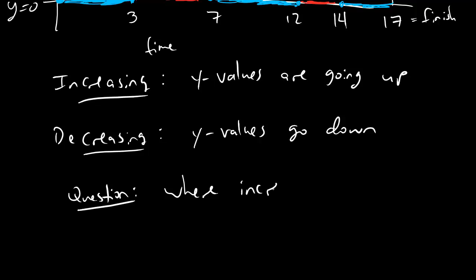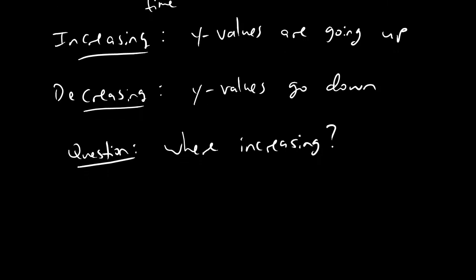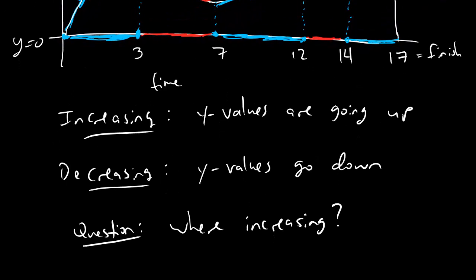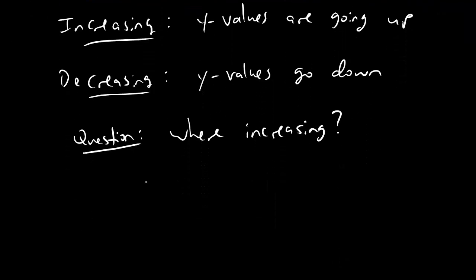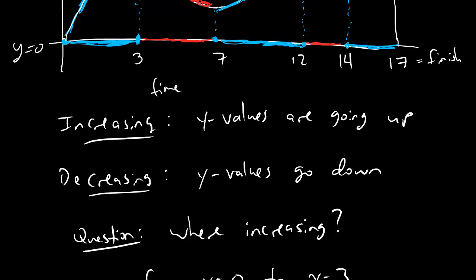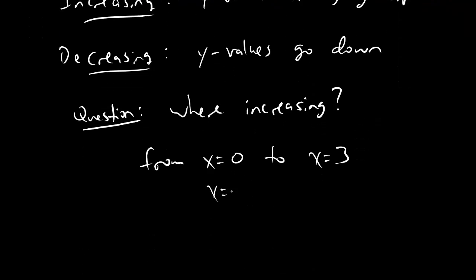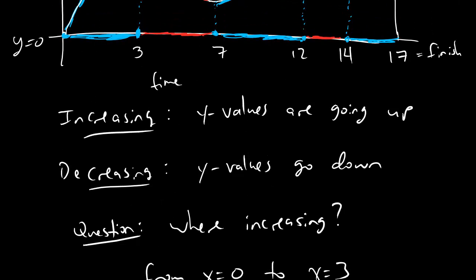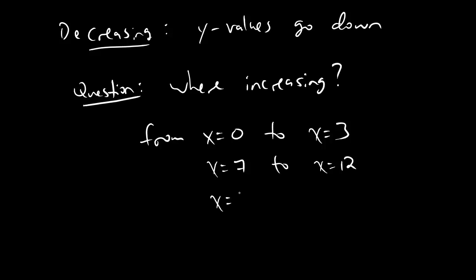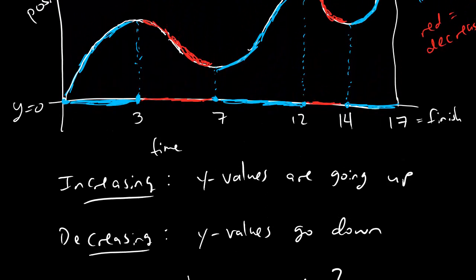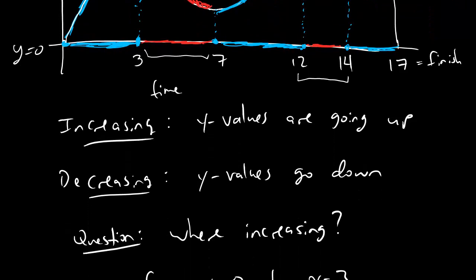And the answer that we're going to give is just going to be in terms of the X values. So let's scroll up and see. The very first interval where it's increasing is from 0 to 3. And remember, these are X values. Scroll up again. It's also increasing from 7 to 12. And also increasing from 14 to 17. And now, of course, if Pat's owner had also asked us for the intervals where it's decreasing, we would have said it's decreasing from X equals 3 to X equals 7. That's right here. And it's also decreasing from X equals 12 to X equals 14. Those are the intervals where it's decreasing.